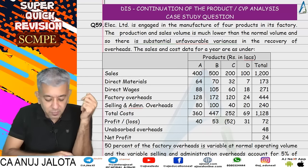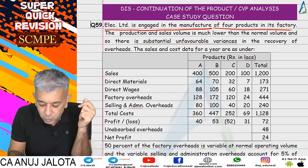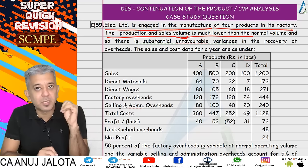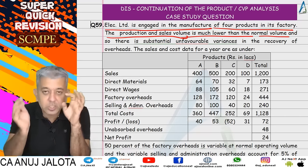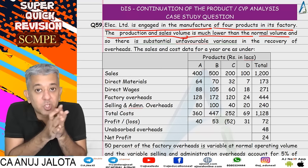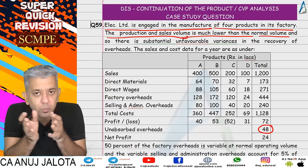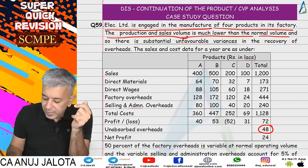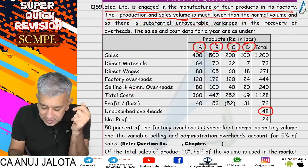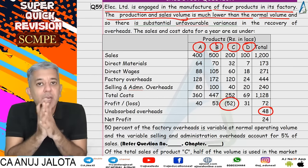Let's start question 59. ELEC is engaged in manufacture of four products in its factory. The production and sales volume is much lower than the normal volume. Agar kabhi tumhara actual volume will be lower than your budgeted volume, then in that particular case there'll be under absorption. Apart from that, apne paas 4 products thay — A, B, C, and D. In this case, C was loss-making as per them.